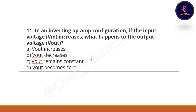Next question: In an inverting op-amp configuration, if the input voltage V-in increases, what happens to the output voltage? Option A: V-output increases. Option B: V-output decreases. Option C: V-output remains constant. Option D: V-output becomes zero. The correct option is V-output decreases.